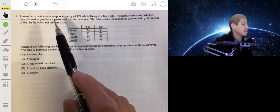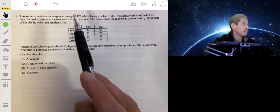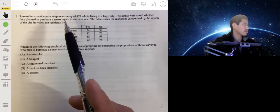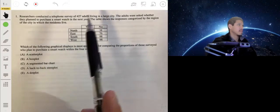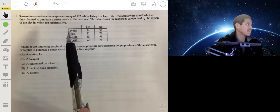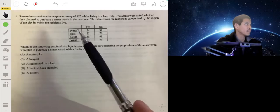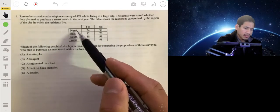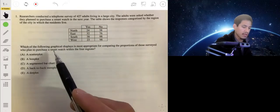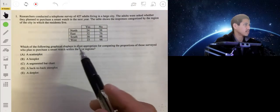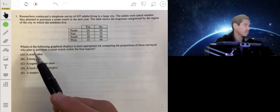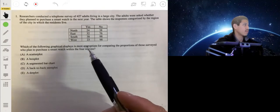Here it says researchers conducted a telephone survey of 427 adults living in a large city. The adults were asked whether they plan to purchase a smartwatch in the next year. The table below shows the responses categorized by the region in the city in which the residents live. It looks like we have it broken down into northeast, south, and west, and here are the yeses and here are the noes. The question is, which of the following graphical displays is the most appropriate for comparing the proportions of those surveyed who plan to purchase a smartwatch in the four regions?